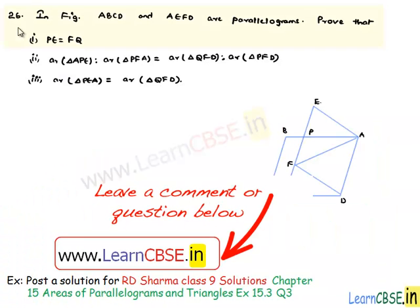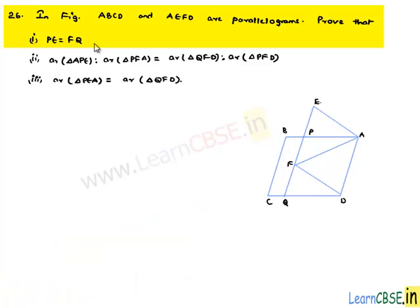Now, let us discuss problem 26 from Chapter 15.4. In the figure, ABCD and AEFD are parallelograms. Prove that: first, PE is equal to FQ; second, area of triangle APE to area of triangle PFA is equal to area of triangle QFD to area of triangle PFD; and third, area of triangle PEA is equal to area of triangle QFD.